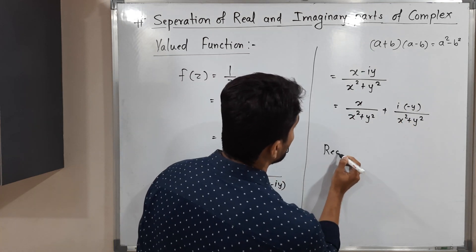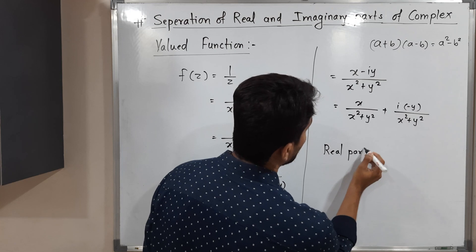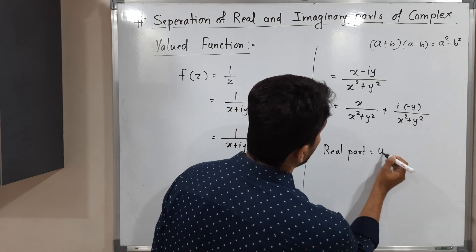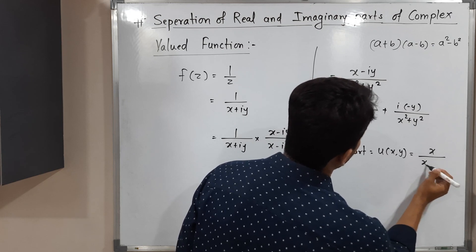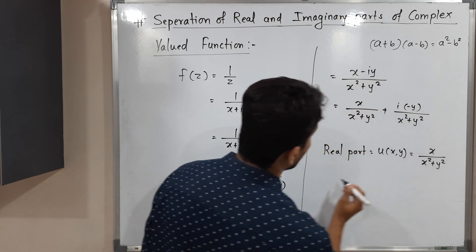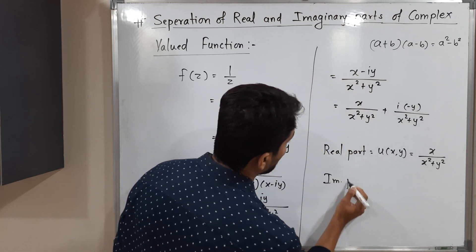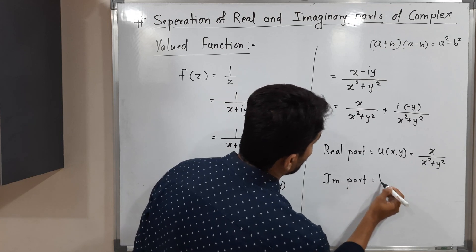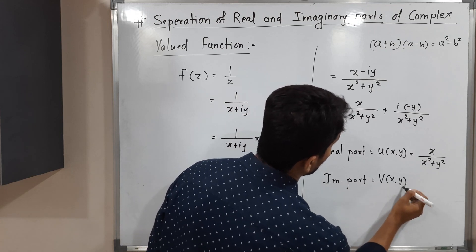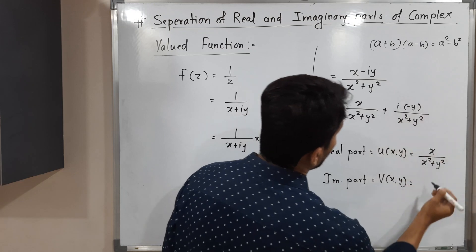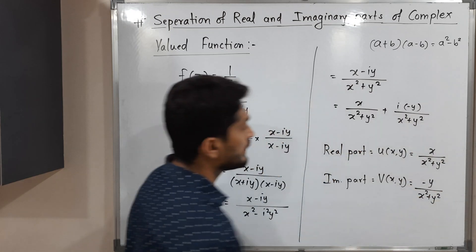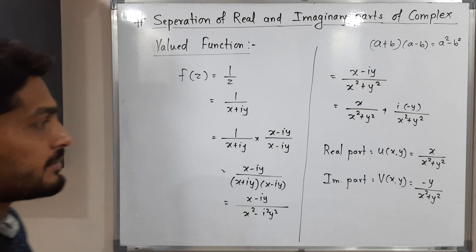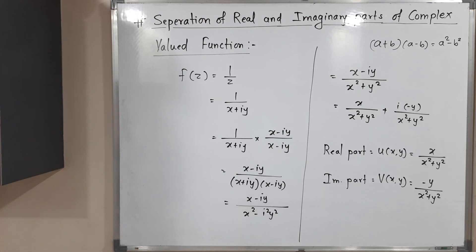Therefore, the real part of the given complex valued function f(z) = 1/z, denoted by u(x,y), is x over (x squared plus y squared). And the imaginary part, denoted by v(x,y), is minus y over (x squared plus y squared). In this way we can separate the real and imaginary part of any given complex valued function.